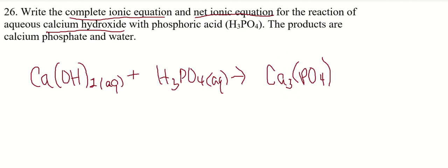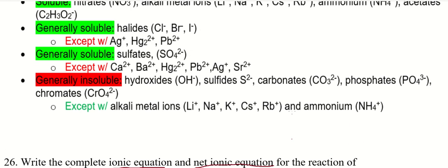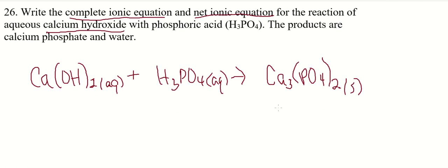So it'll be Ca3 and then two phosphates. And this is going to be a precipitate. So I'll put S for solid. If you need to refer to your solubility rules, phosphates are generally insoluble.